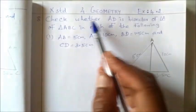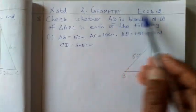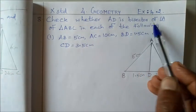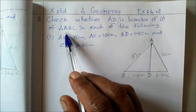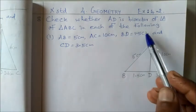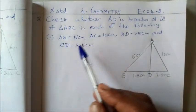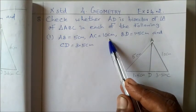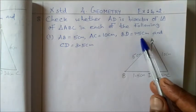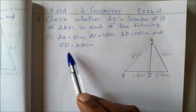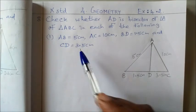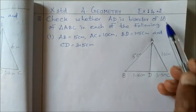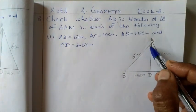This is 10th standard, 4th unit geometry, section 4.2, 8th sum. Check whether AD is the bisector of angle A of triangle ABC in each of the following. There are 2 sums. First one: AB equal to 5cm, AC equal to 10cm, BD equal to 1.5cm, and CD equal to 3.5cm. We will check that AD is the bisector of angle A.